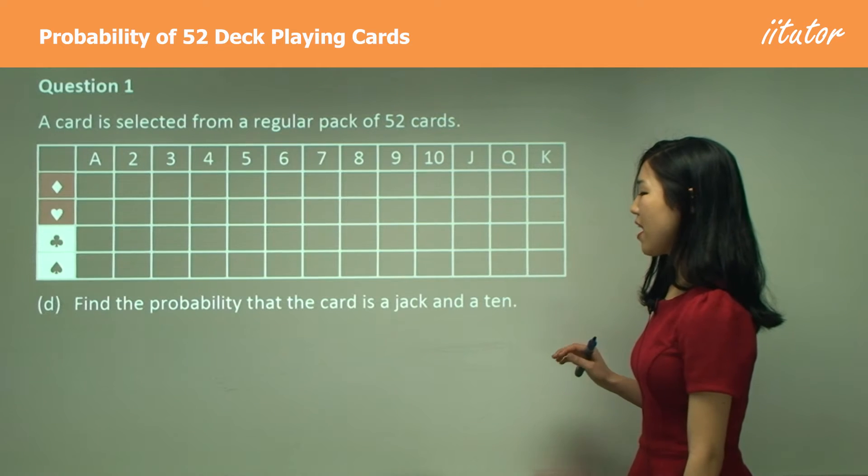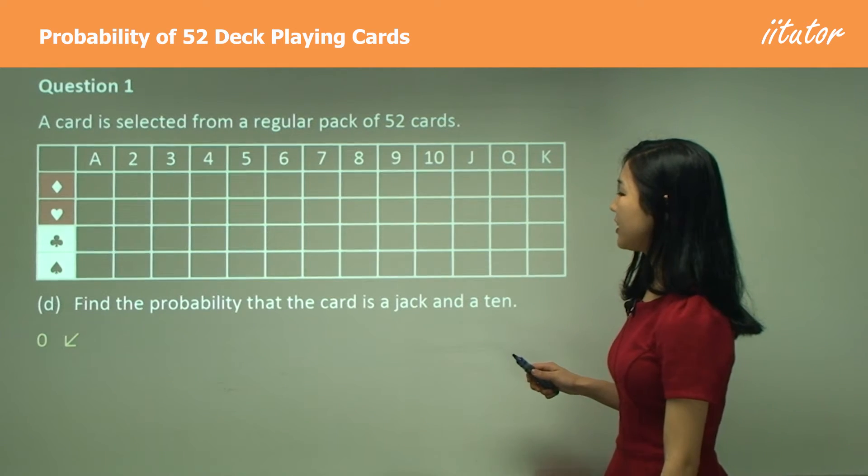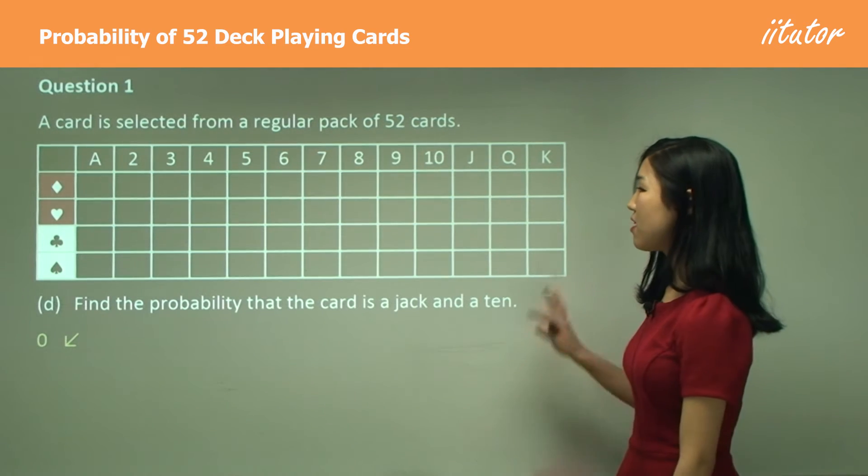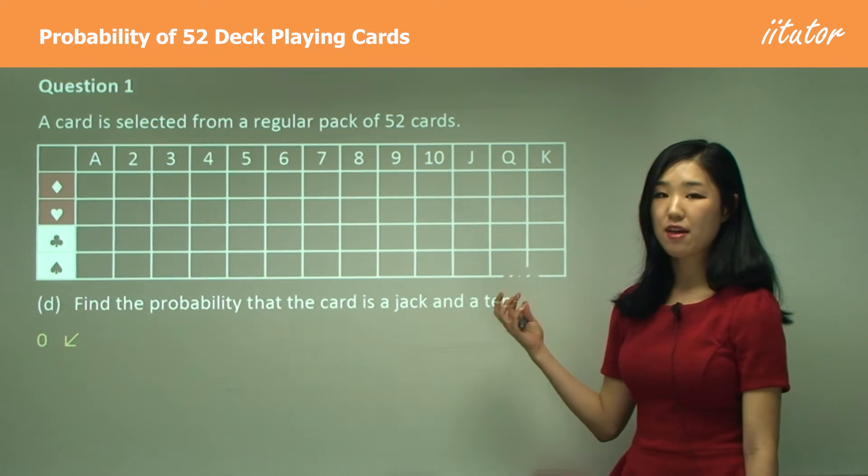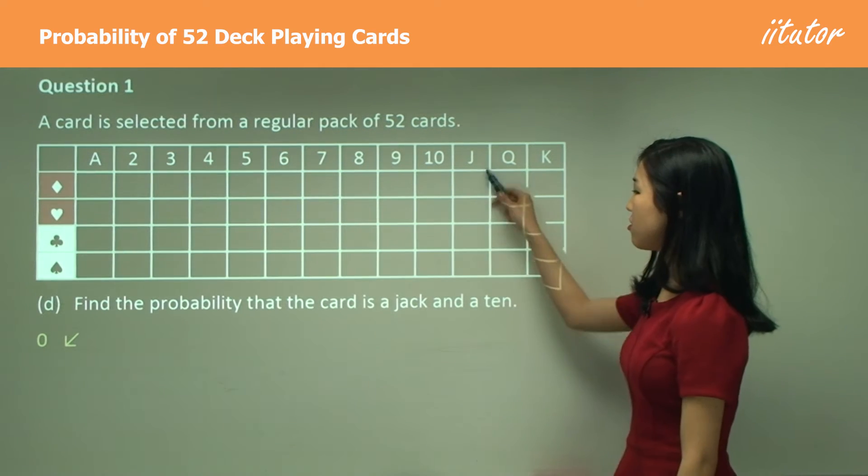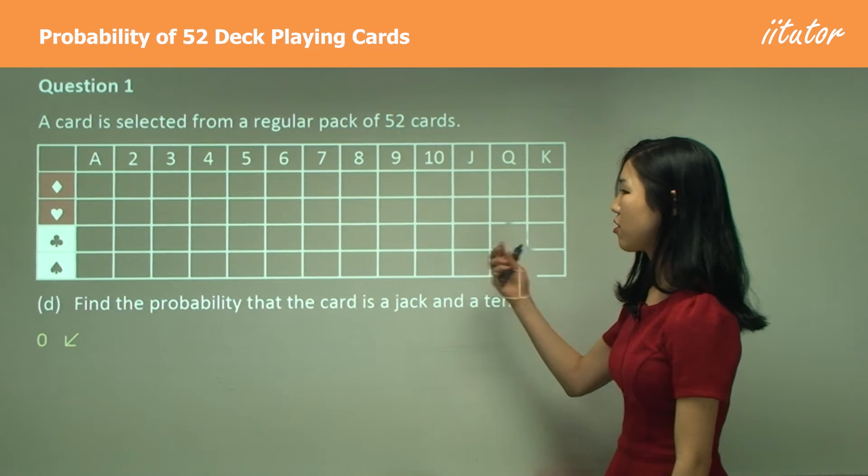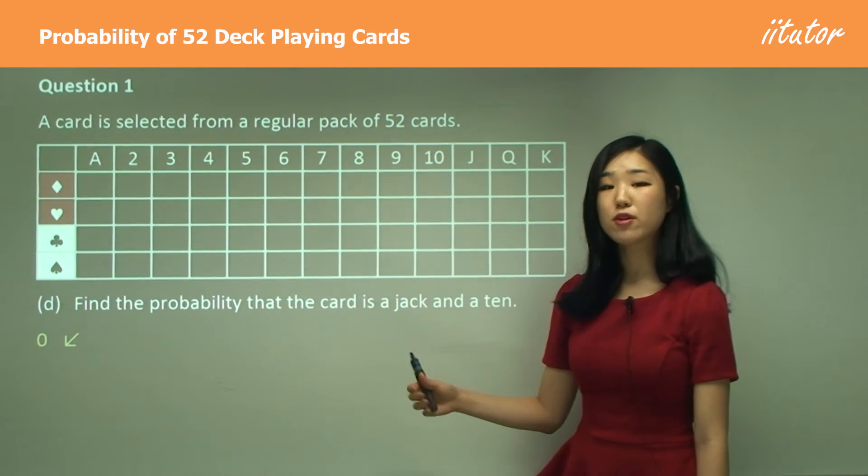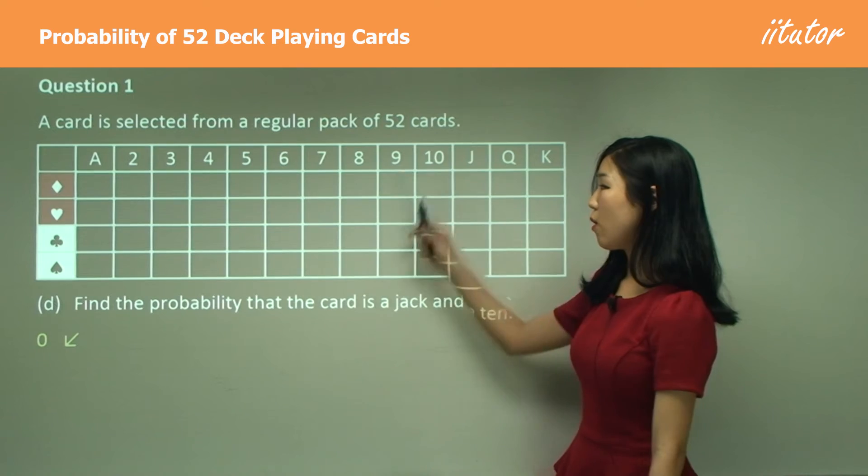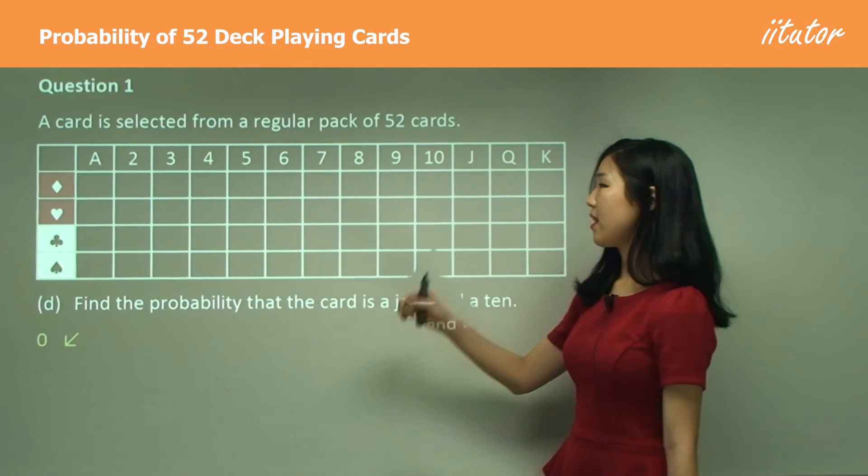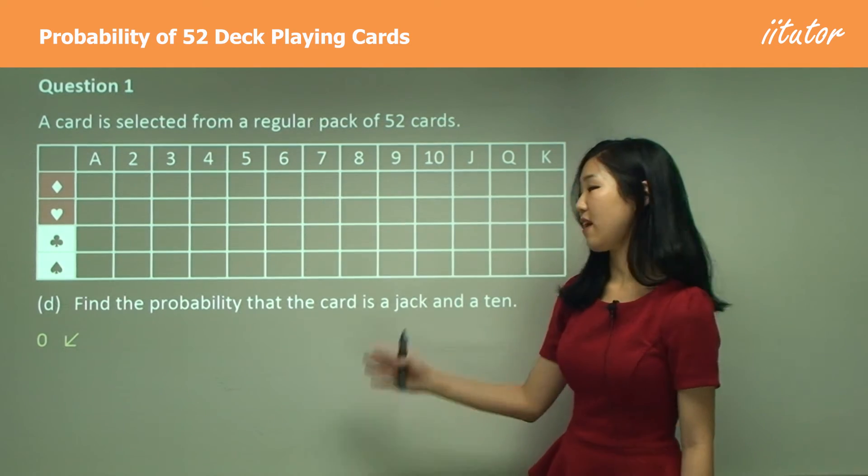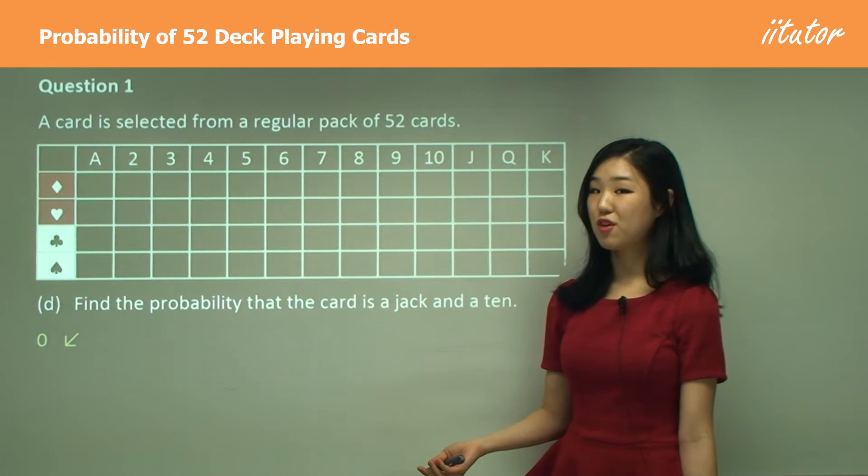Part d: Find the probability that the card is a Jack and a 10. Jack and a 10 is zero because there's no particular card that is both Jack and a 10. This is Jack and this is a 10, but there's no card that is Jack and a 10. We could have Jack and a heart, for example, or a 10 and a heart, but we can't have a card that's both Jack and 10. So that's why the probability is zero—there's no outcome.